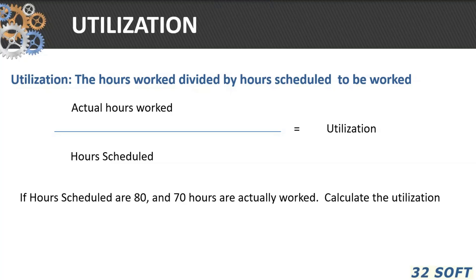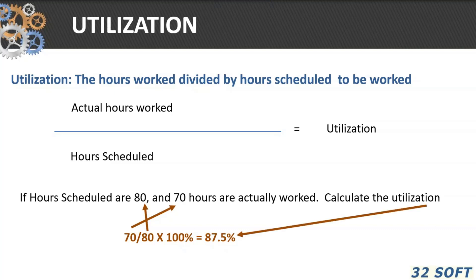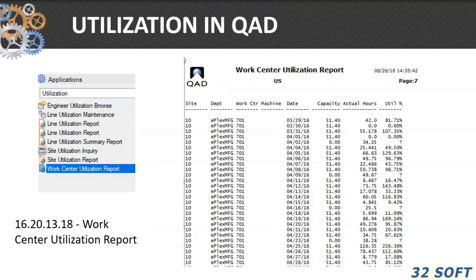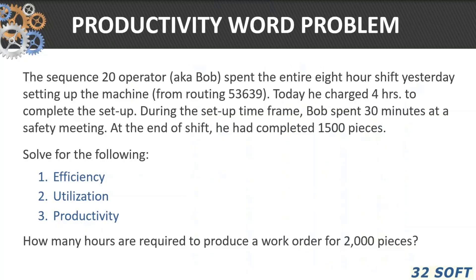For example, if hours scheduled are 80 and we actually worked 70, the utilization is 70 divided by 80, which gives us 87.5 percent. In QAD, report 1620-138, the work center utilization report, gives you the utilization for each one of your work centers.